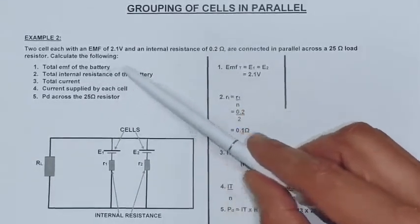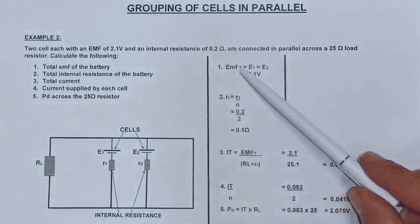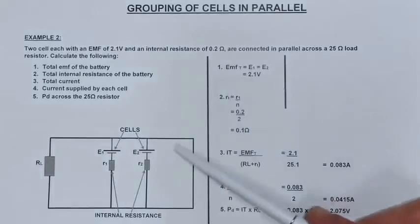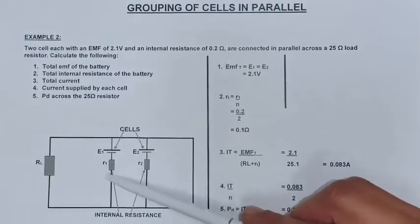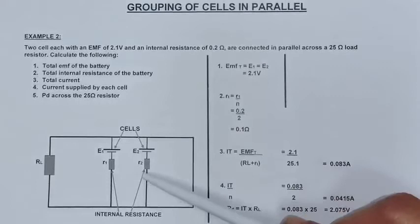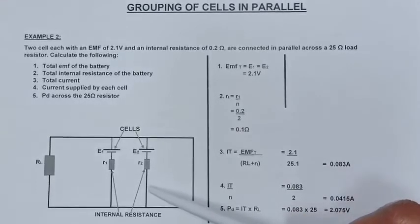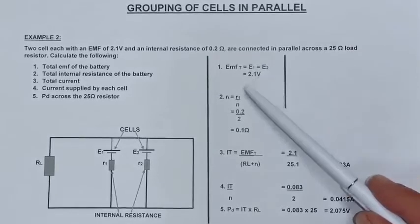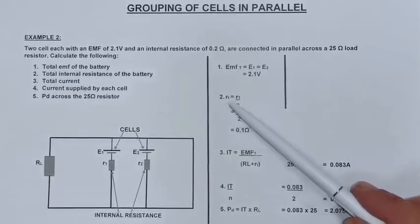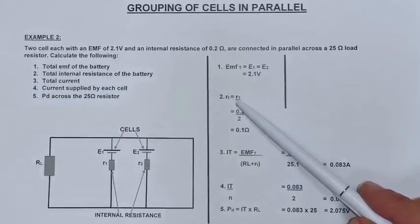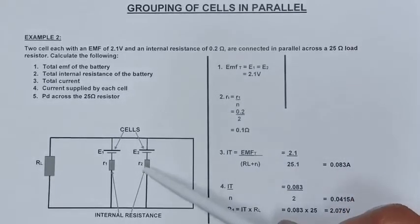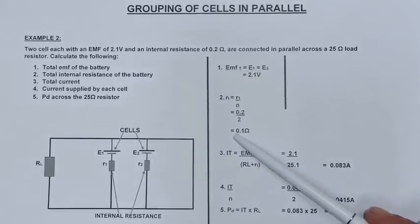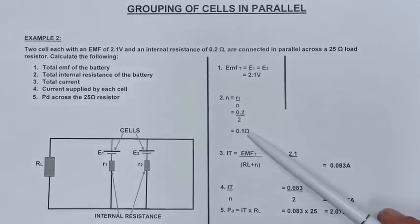Calculate the total EMF of the battery. EMF total equals E1, which equals E2, because I am sitting with two cells in parallel, and over a parallel section my voltage will be the same. That is going to be 2.1 volts. My total internal resistance is going to be R1 divided by N, where N is the number of cells in parallel, which is 2, giving me an ohms value of 0.1 ohms.